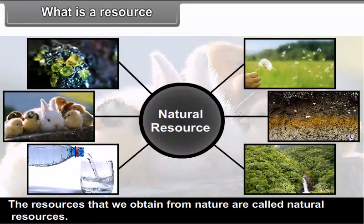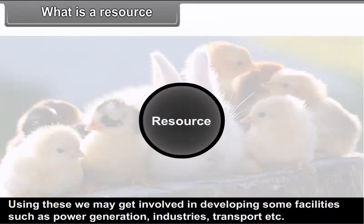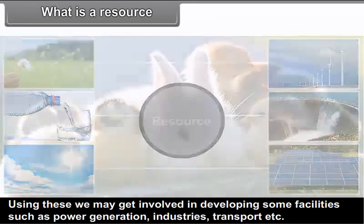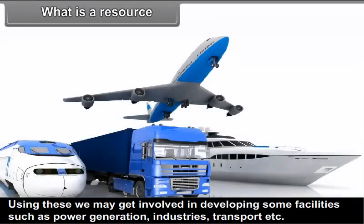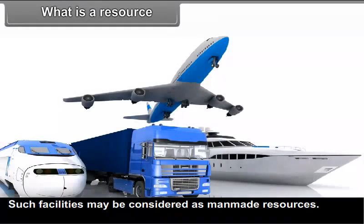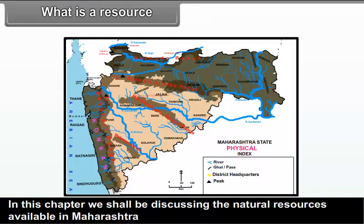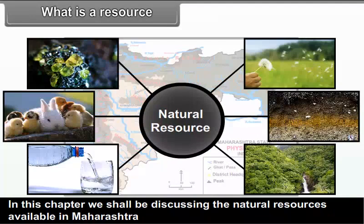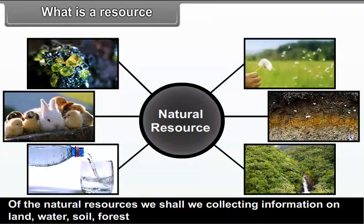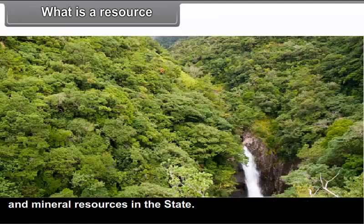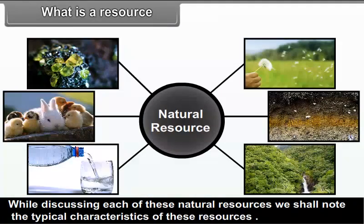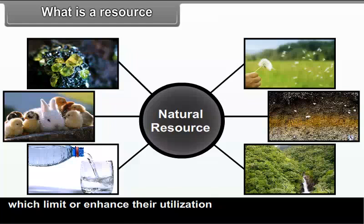The resources that we obtain from nature are called natural resources. Using these, we may develop facilities such as power generation, industries, and transport. Such facilities may be considered as man-made resources. The development of a region basically depends on the availability of resources and their proper and judicious utilization. In this chapter, we shall discuss natural resources available in Maharashtra — land, water, soil, forest and mineral resources — noting the characteristics that limit or enhance their utilization.